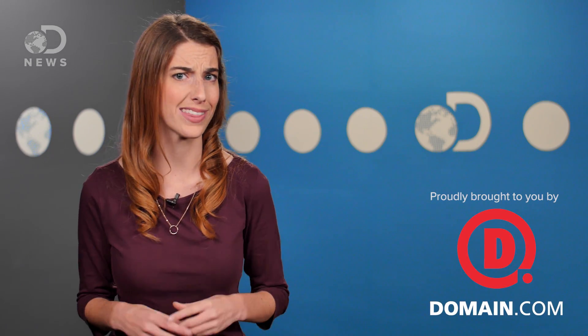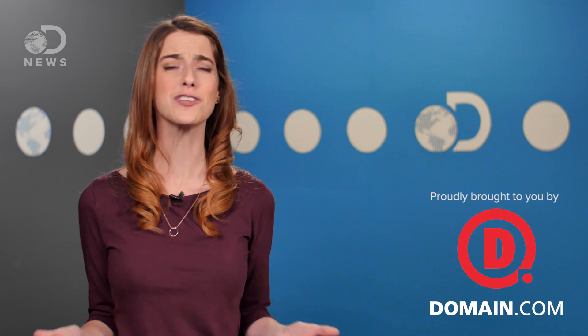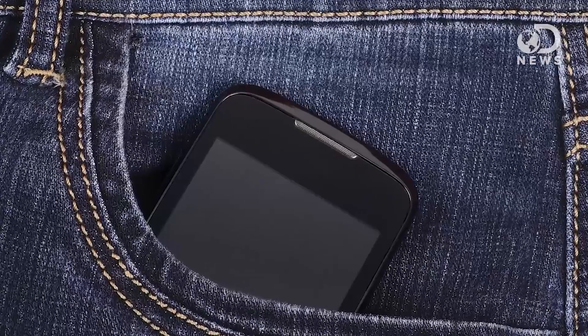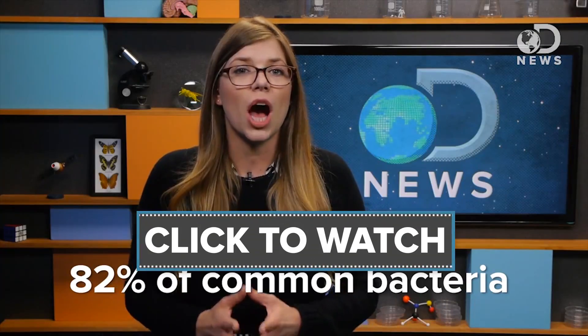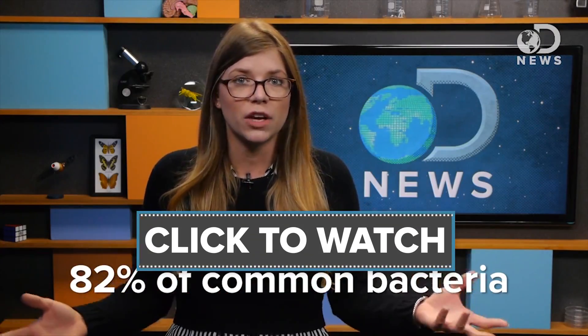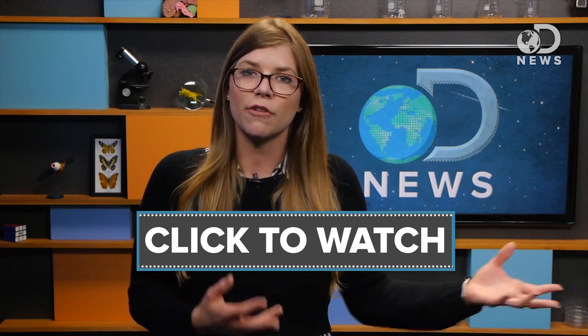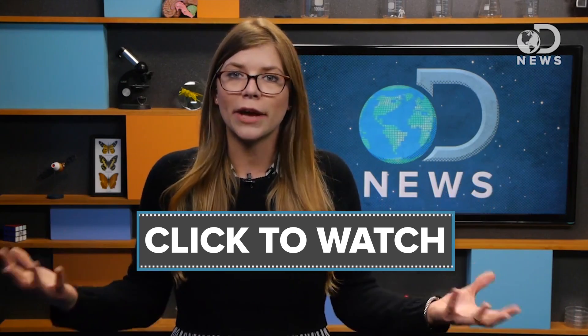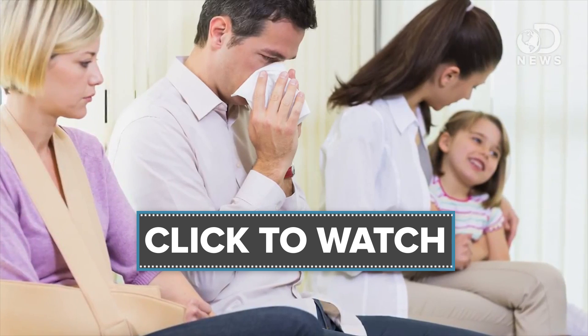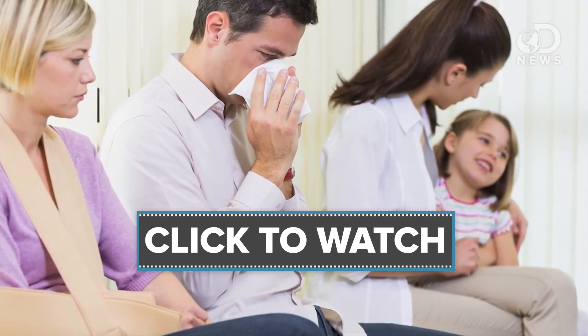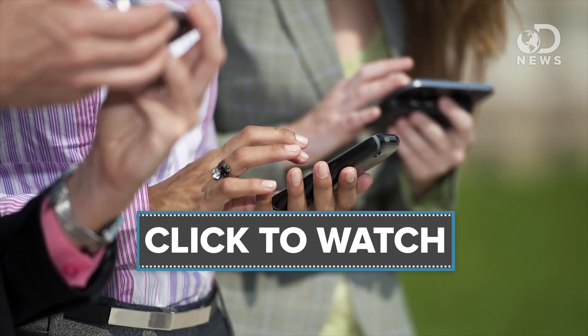But the dish sponge isn't the only thing that's covered in bacteria. Your cell phone is pretty freaking gross. Check out how gross in this episode right here. 82% of the most common bacteria found on the subject's fingers were also present on their phones. Meaning your personal microbiome, which is the specific collection of bacteria that's unique to every person, closely resembles the bacteria on your phone.